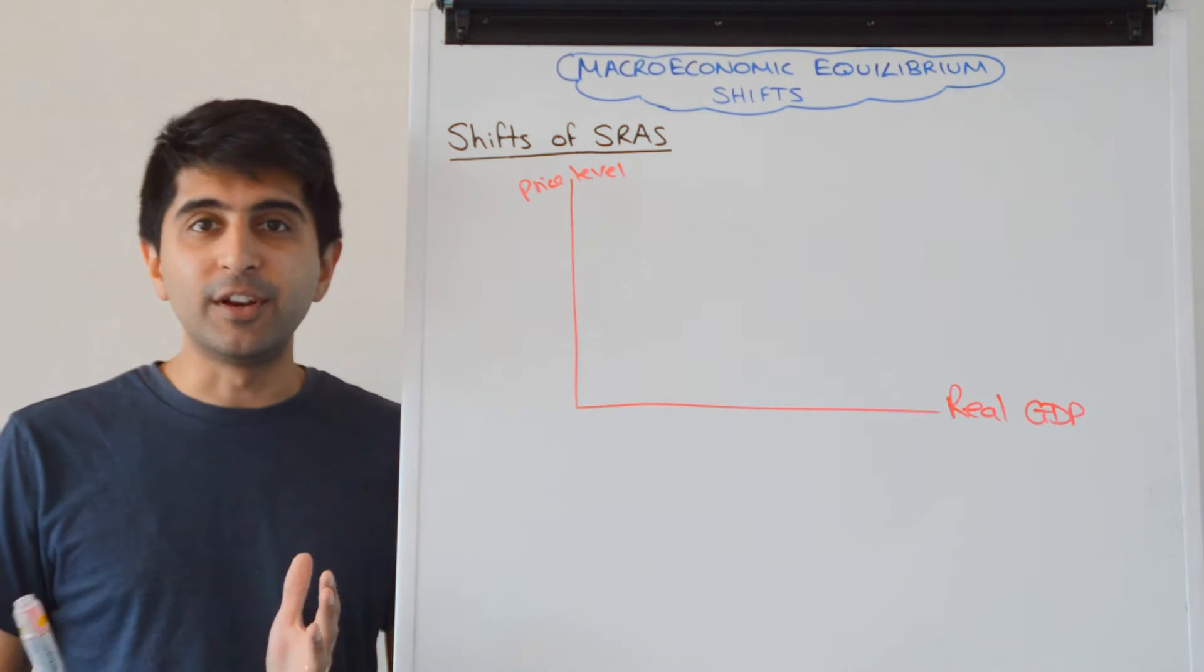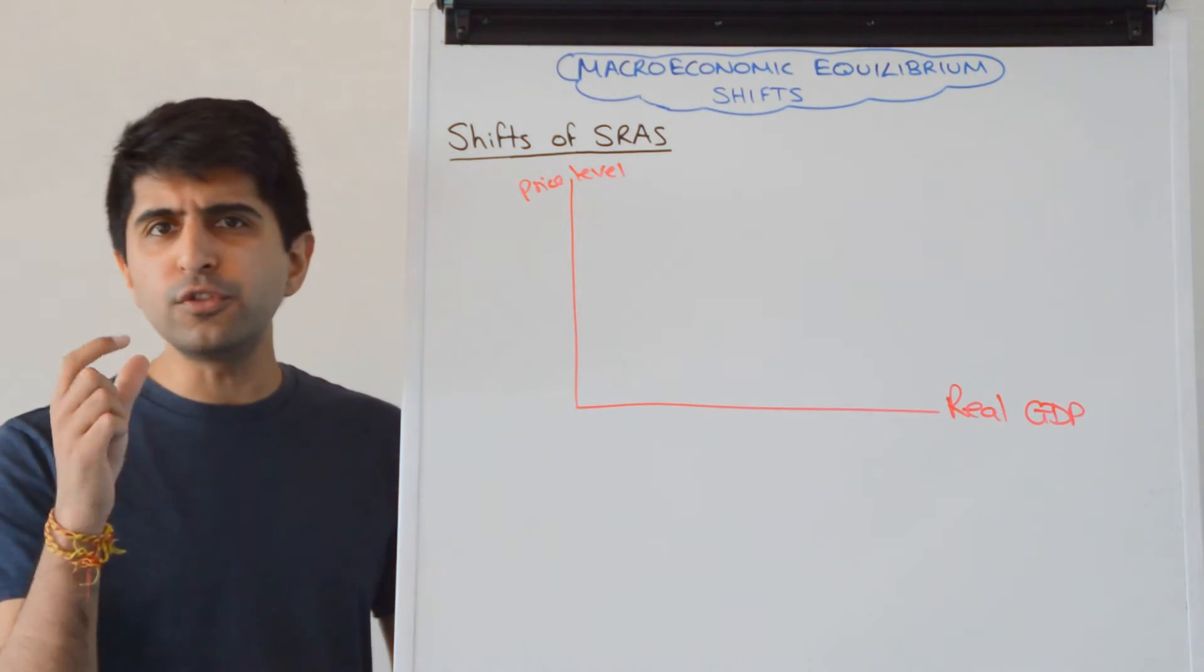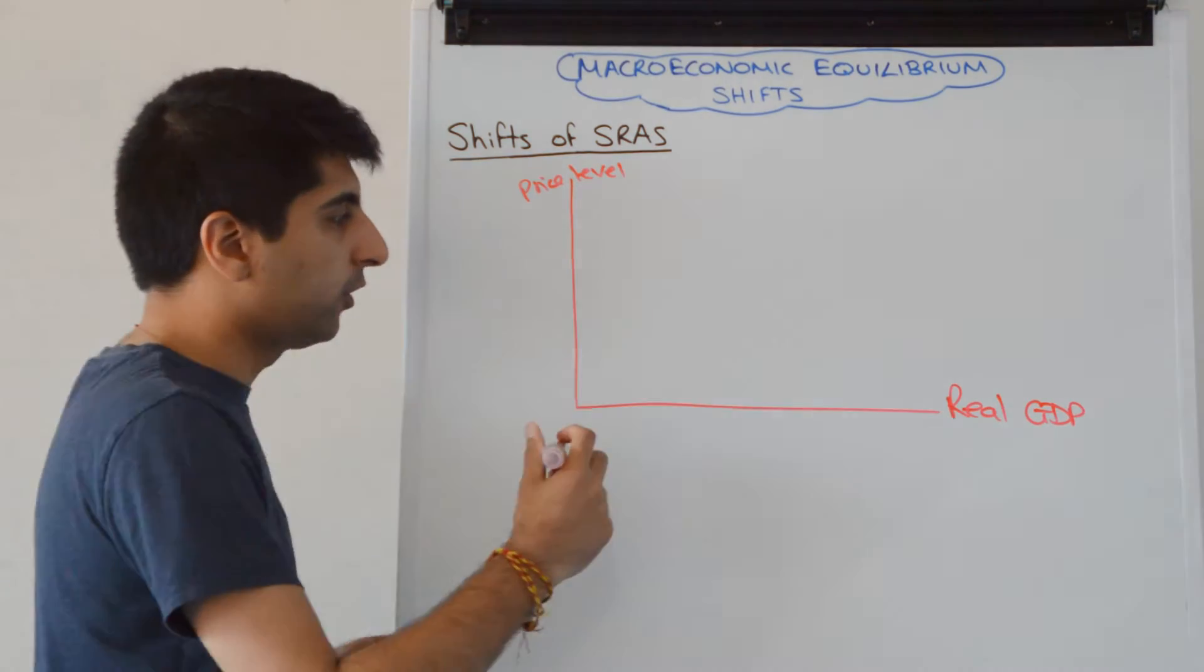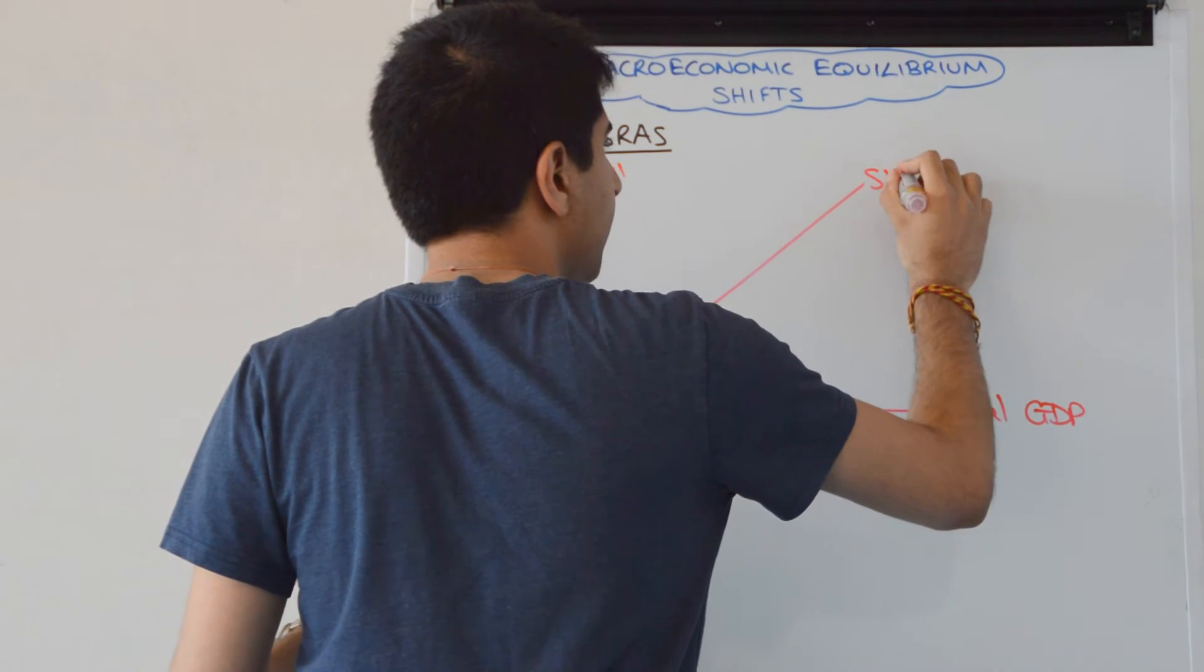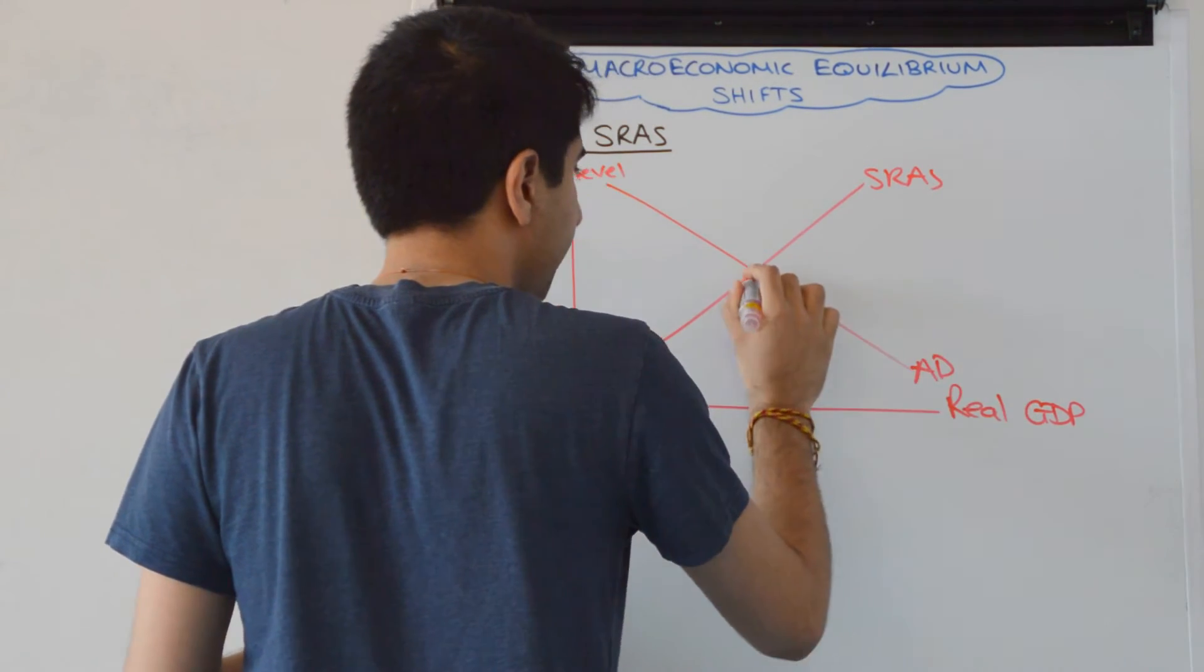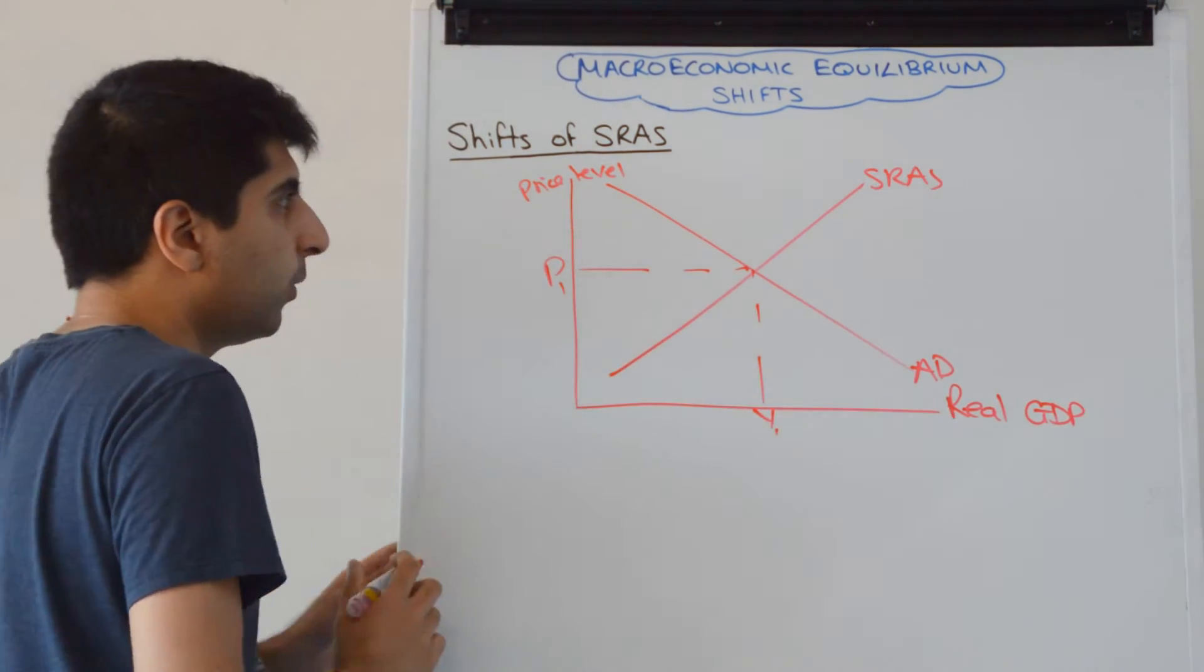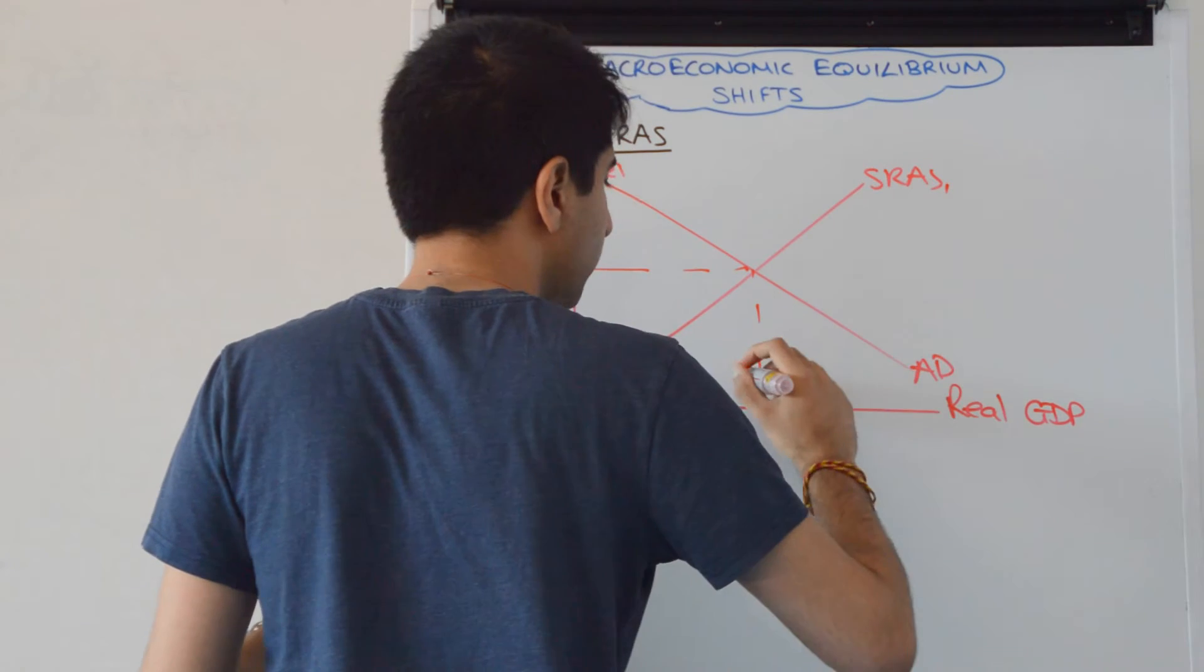Shifts of SRAS is really simple, it's a classical model phenomena, so you have to use that. Use the simplified version. So we've got SRAS there, we've got AD cutting it, keep it as simple as that, equilibrium at Y1, price level at P1, and then just shift SRAS whichever way.